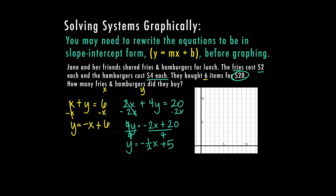I'm going to graph both equations. For the first one, y equals negative x plus 6: my y-intercept is at (0, 6). My slope is negative 1 over 1, so I go down 1, right 1 — down 1, right 1 — down 1, right 1 — down 1, right 1. That's enough points to draw my first line.